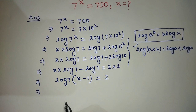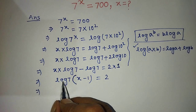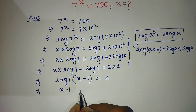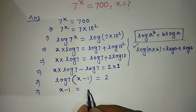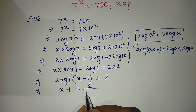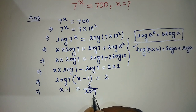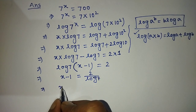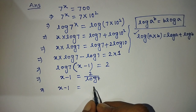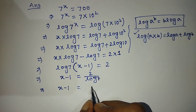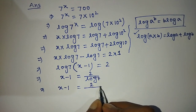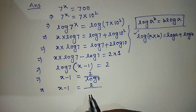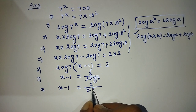We transpose log 7 from the left side to the right side, so x minus 1 is equal to 2 over log of 7. The value of log 7 is 0.84, so x minus 1 equals 2 over 0.84.